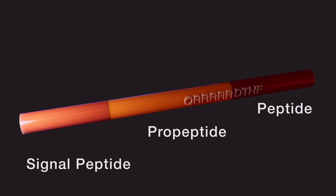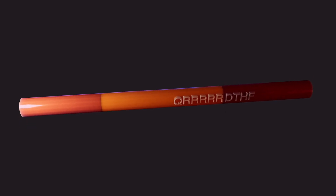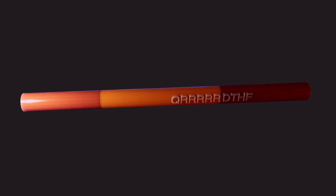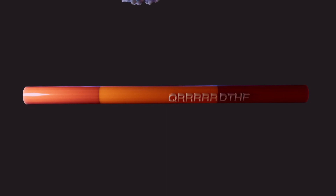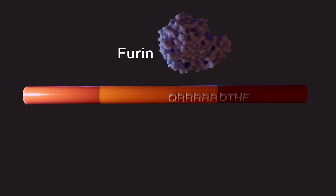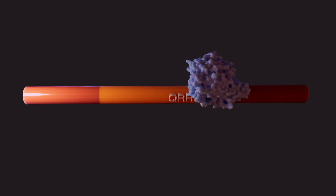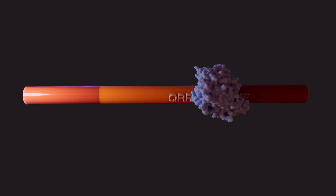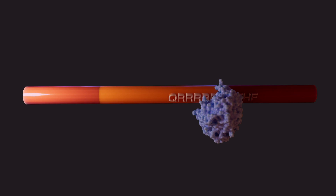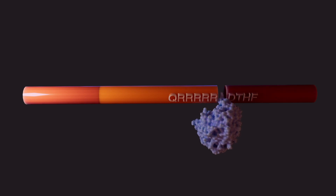Hepcidin is synthesized as an 84-amino acid pre-propeptide. Furin cleavage in the trans-Golgi apparatus produces the active 25-amino acid hormone. The furin recognizes the target sequence and cleaves between the 5th arginine and the aspartate.